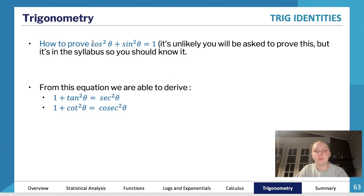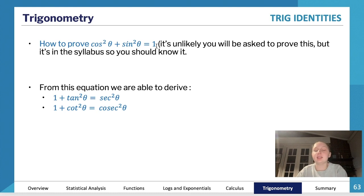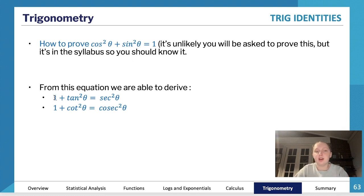Another super important thing to remember is that cos²θ + sin²θ = 1. This is on your formula sheet. It's unlikely you'll be asked to prove it, but it's in scope so you should know how. From this equation you can derive: 1 + tan²θ = sec²θ, and 1 + cot²θ = cosec²θ. These are not on your formula sheet, so you either memorize them or learn how to derive them.